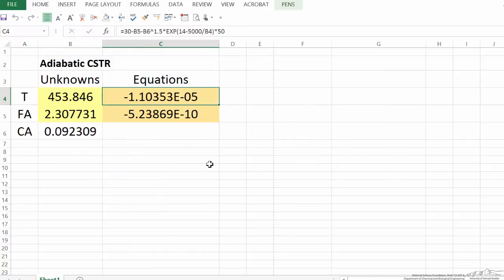It says it found the solution. You can see it made the values reasonably small, and here is the temperature, 454 Kelvin. That makes sense. It's higher temperature. Flow rate, 2.3. We've reacted away a large fraction of our feed, and it's a pretty good fit, 10 to minus 5 and 10 to minus 10.